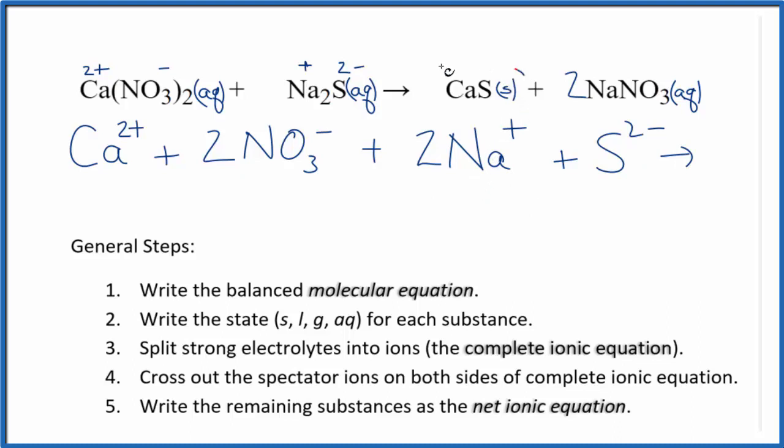For net ionic equations, we don't split solids apart. So we're just going to have CaS plus sodium and the nitrate ions. So 2 sodium ions, just like the reactants, plus we have 2 nitrate ions, NO3 minus. This is the complete ionic equation.